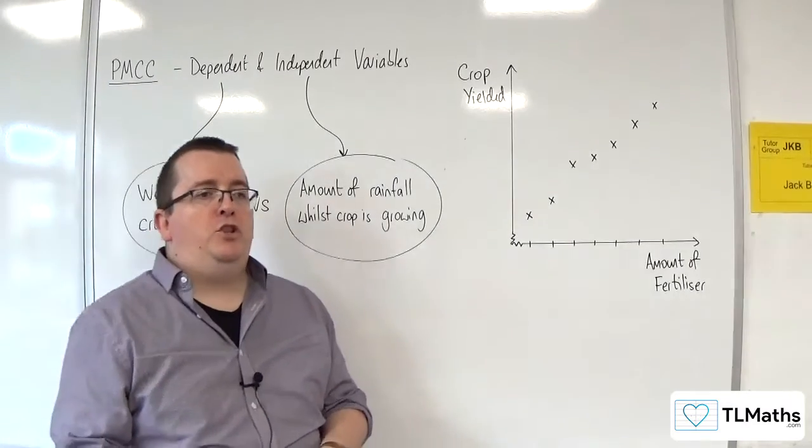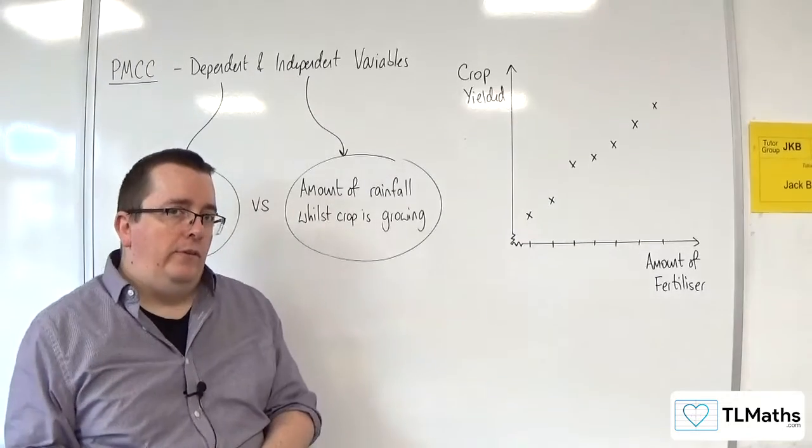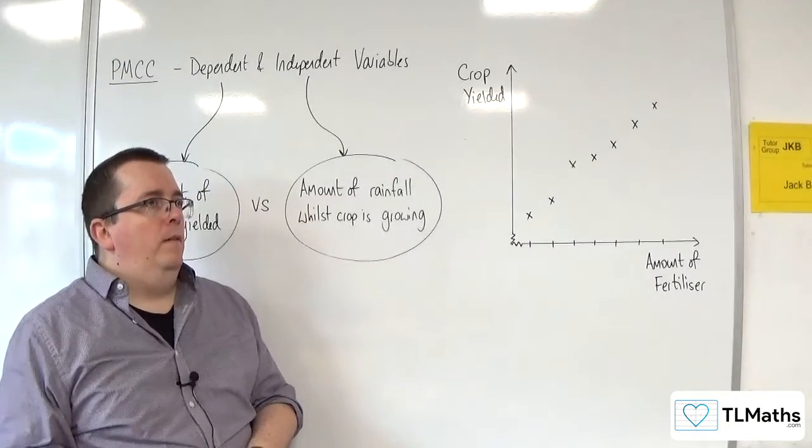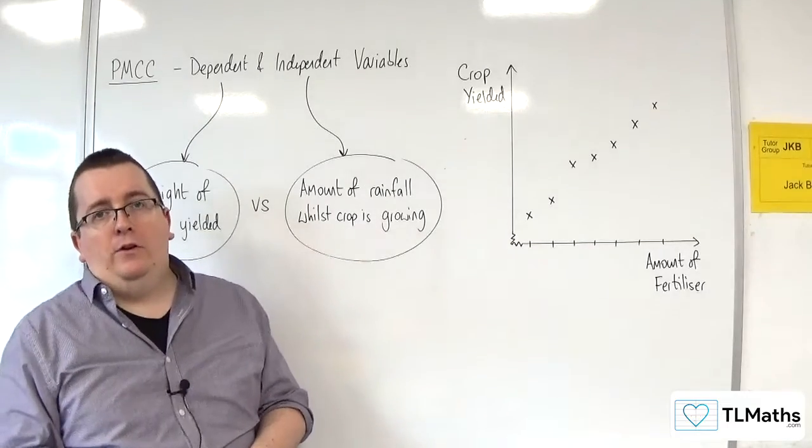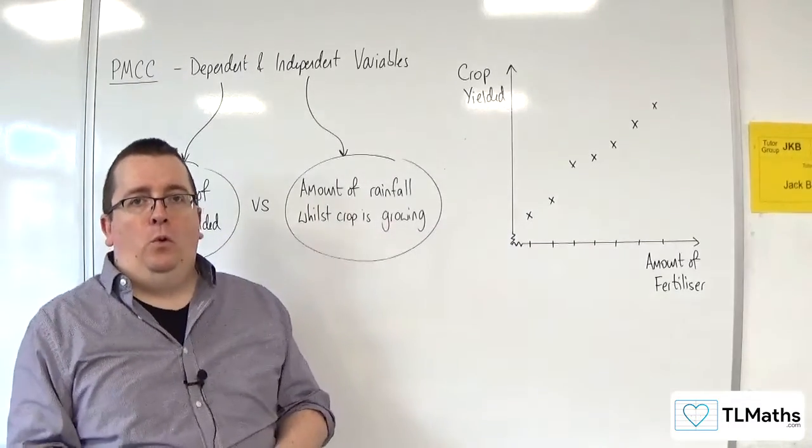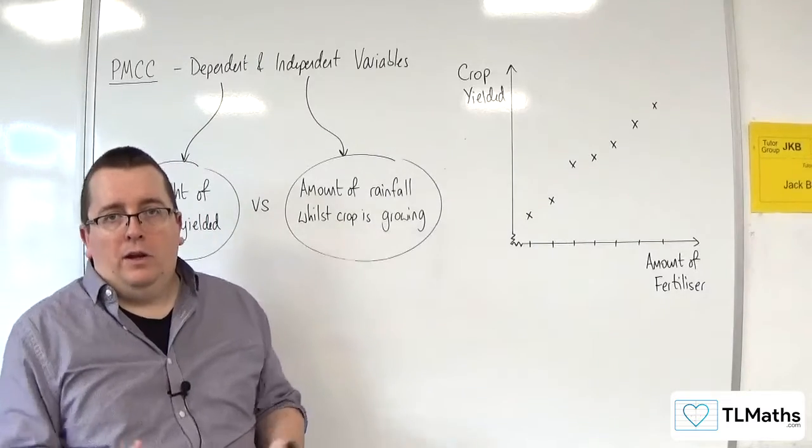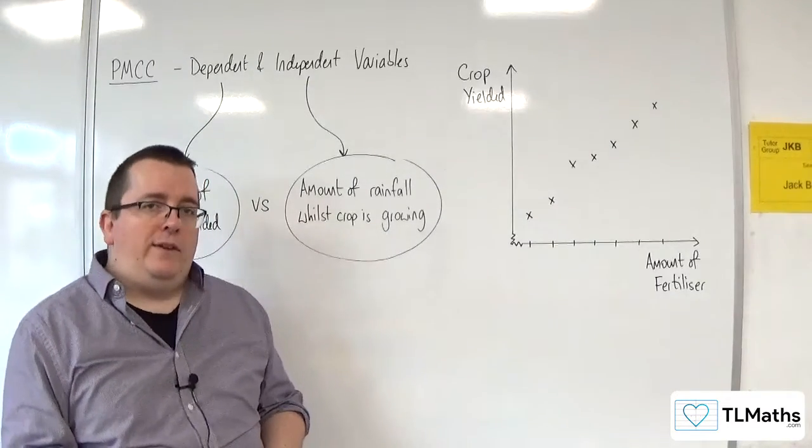The whole point is that you are checking at certain heights how much fungi there is. You wouldn't just randomly choose where to look. Otherwise, you could choose 10 random locations, but they're all at the base of the hill, or close to the base of the hill, for example. You just wouldn't do that in practicality.